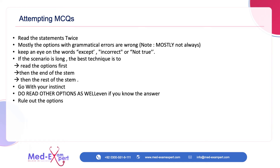Your first instinct, based on what you have studied, is correct about 80% of the time, so trust your instincts. However, you must still read all the options. For example, if you feel option B is okay, tick it but still read the remaining options — it is possible that option C or D is more appropriate. Since you have to choose the best answer, option B may be okay but option D may be more appropriate.